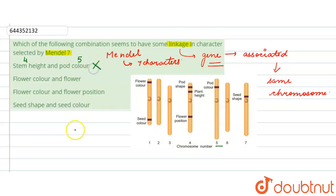The second says flower color and flower position. Flower color is present on chromosome number 1, whereas flower position is on chromosome number 4. So this will also be wrong.